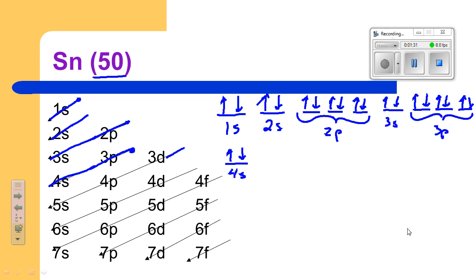After 4s comes 3d. That's 5 orbitals. Notice that I go and I give each one of them 1 electron first. I'm following Hund's rule that says that you don't pair up electrons until you have every orbital in that sublevel filled.